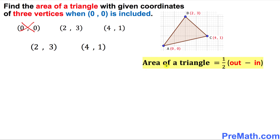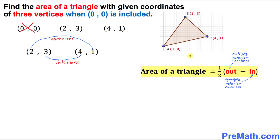We are going to use this formula instead: the area of the triangle is equal to one-half times (out minus in). Here, "out" means we're going to multiply the exterior numbers, and "in" means we're going to multiply the interior numbers. As you can see, two and one are the exterior numbers, and three and four are the interior numbers.